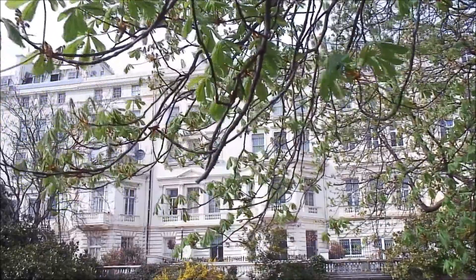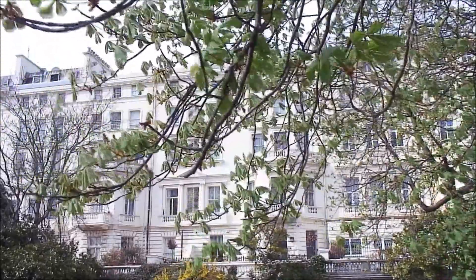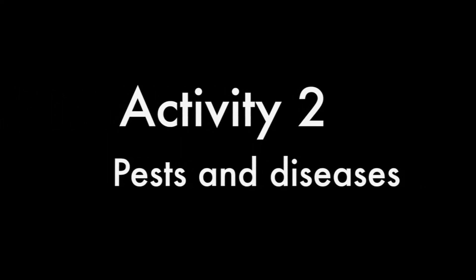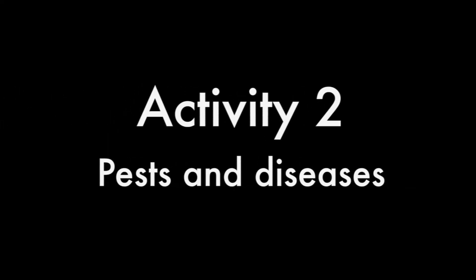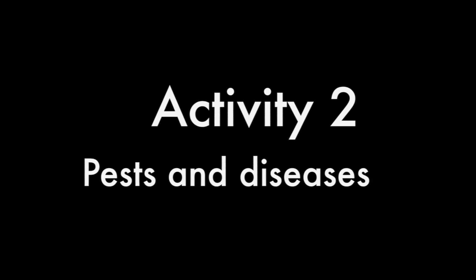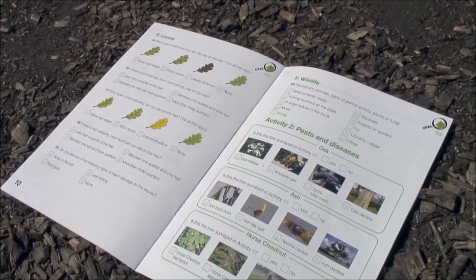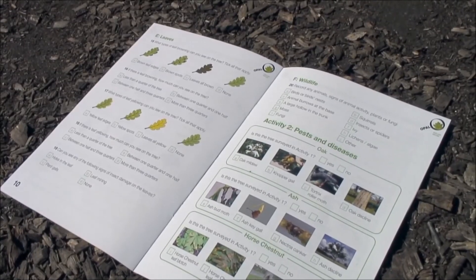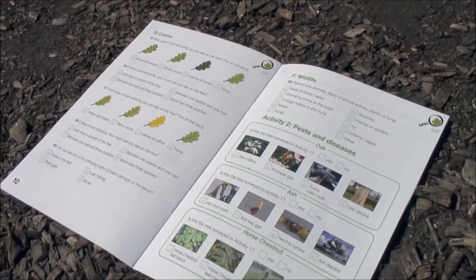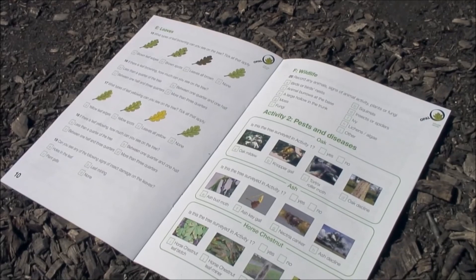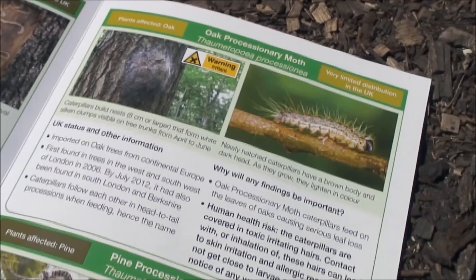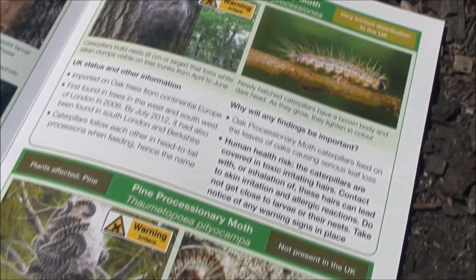Now you're ready to spot pests and diseases in activity 2. You can find information to help you identify some common pests and diseases that affect oak, ash, and horse chestnut in the field guide.